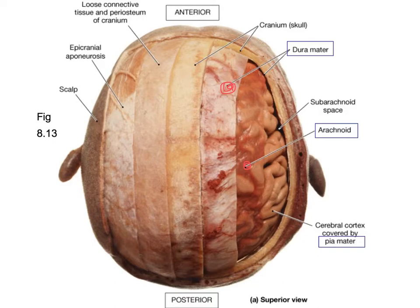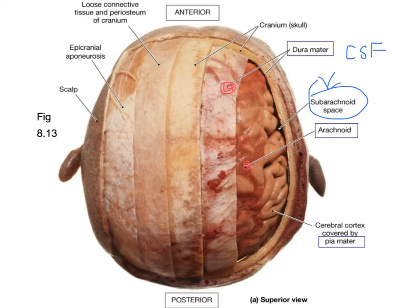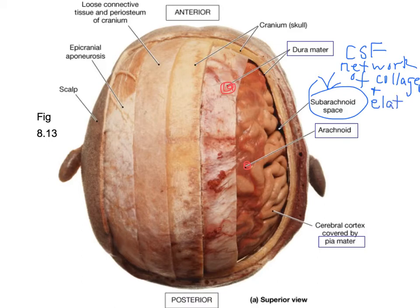The arachnoid lies between the dura mater and the pia mater. Between the arachnoid and the pia mater is the subarachnoid space, where you can find CSF — cerebrospinal fluid. The subarachnoid space is a delicate network of collagen and elastin fibers.